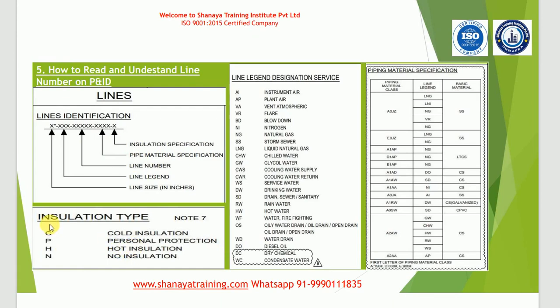The next element is insulation specification. Various fluids flow in pipelines — sometimes cold, sometimes hot, sometimes viscous fluids whose physical properties may change on contact with the atmosphere. To protect those properties we insulate the line. If C is written, it means cold insulation. P means personal protection. H means hot insulation. N means no insulation. These are the insulation classes.